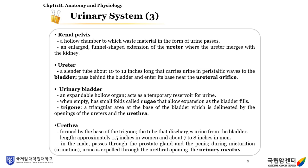The ureter is a slender tube about 10 to 20 inches long that carries urine in peristaltic waves to the bladder. The urinary bladder is an expandable hollow organ that acts as a temporary reservoir for urine. When empty, there are small folds called rugae that allow expansion as the bladder fills. The trigone is a triangular area at the base of the bladder, delineated by the openings of the ureters and the urethra. The urethra discharges urine from the bladder—approximately 1.5 inches in women and 7 to 8 inches in men. In the male, the urethra passes through the prostate gland and the penis. During micturition (urination), urine is expelled through the urethral opening, the urinary meatus.